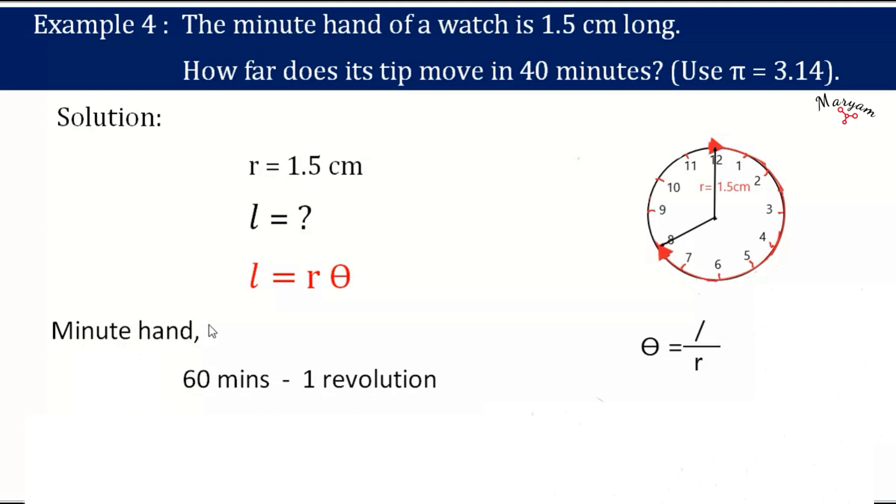Now see here, the minute hand in 60 minutes completes one revolution, that is in 60 minutes it completes 360 degrees. So if this minute hand completes this whole revolution, then it completes 360 degrees.